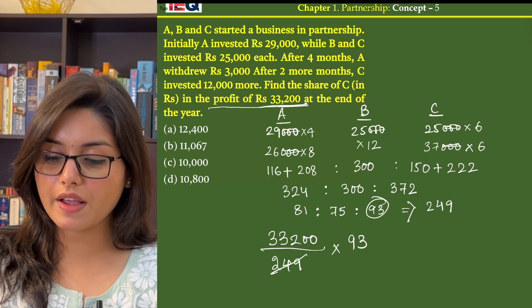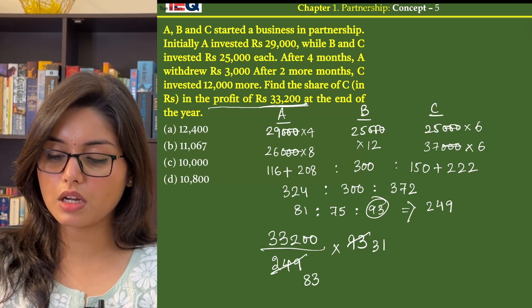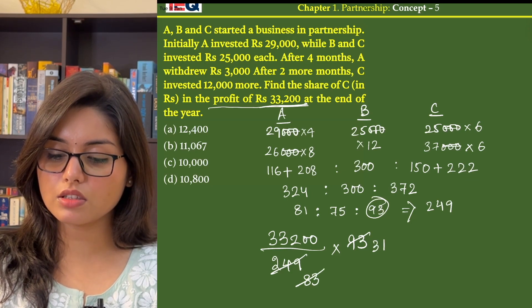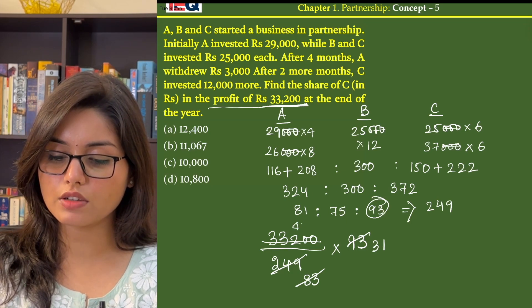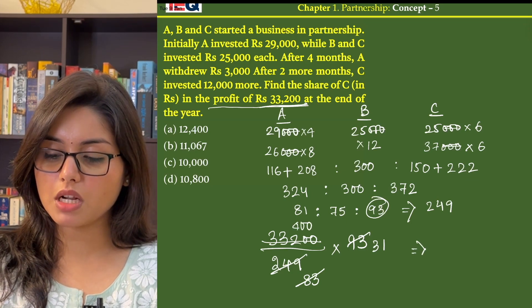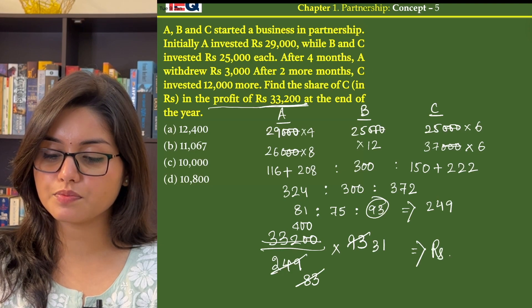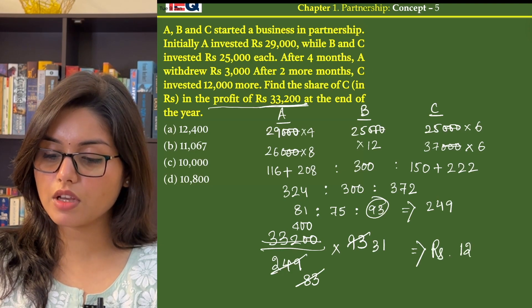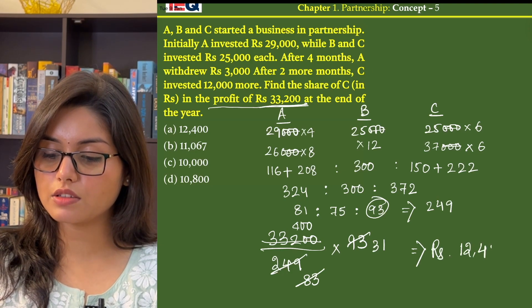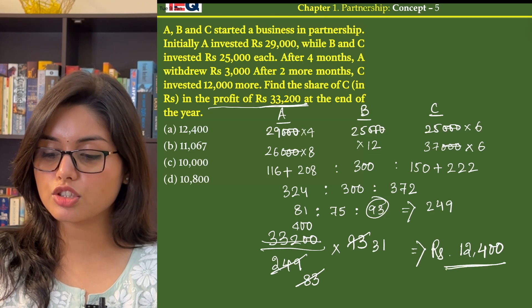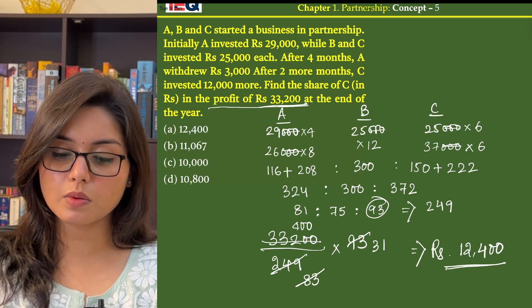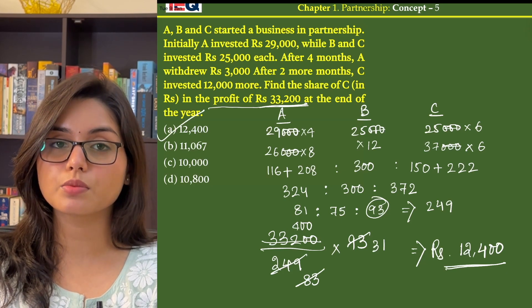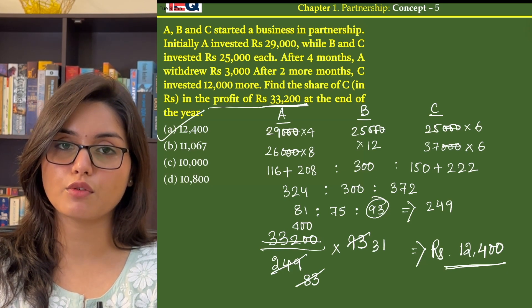Dividing by 3, we get 83 and 31. On dividing 33,200 by 83, we get 400. Multiplying 400 × 31, we get Rs 12,400 as the share of C in the profits. So the answer to this question is option A, that is Rs 12,400.